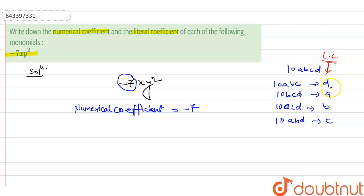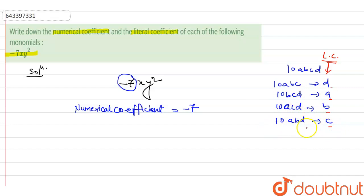Like: 'd' is literal coefficient for 10acd; 'd' is literal coefficient for 10bcd; 'c' is literal coefficient for 10abd. There are many pairs for this.